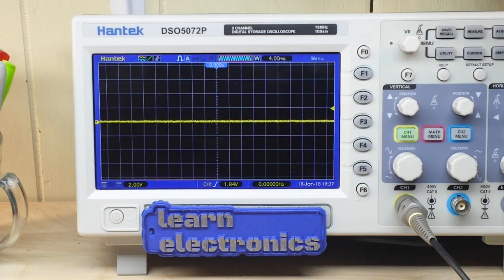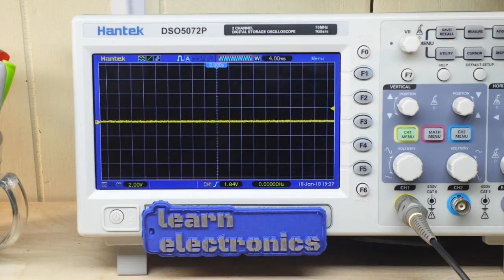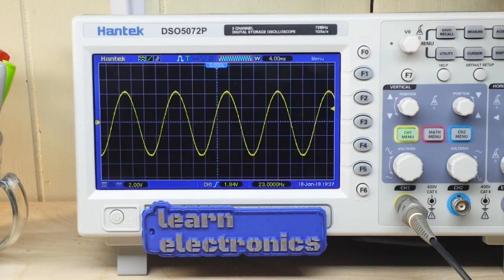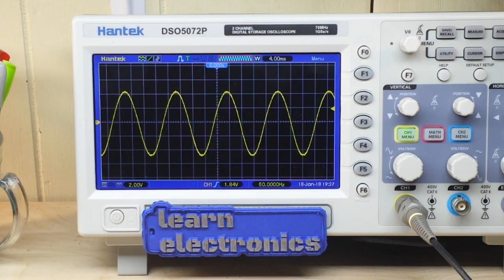So let's start out with I've got my function generator set for a 60 Hertz sine wave, 10 volts peak to peak, and so I'm going to probe that circuit right here. And if you look you can see the 60 Hertz down there on the bottom right in the frequency counter area, you can see the sine wave.